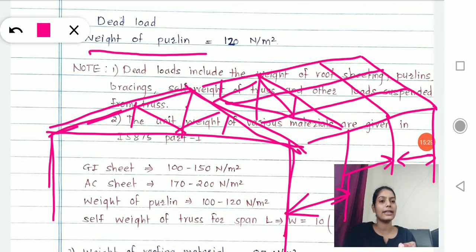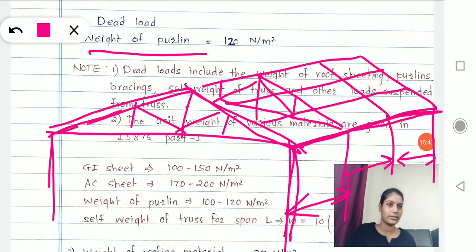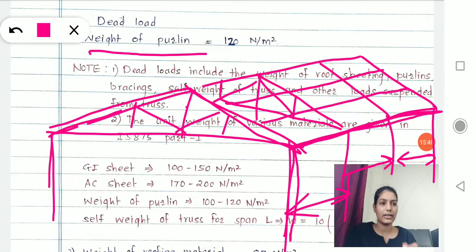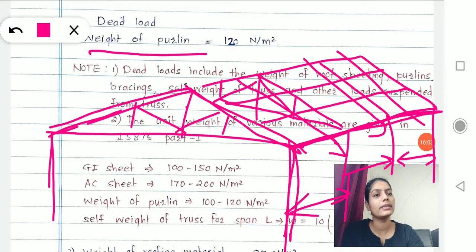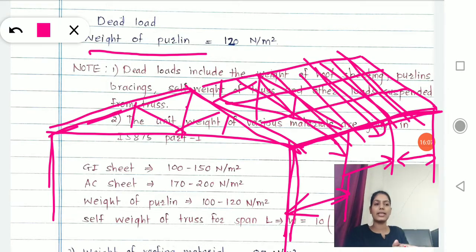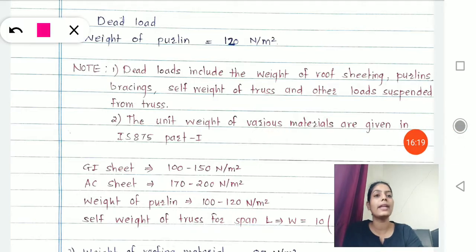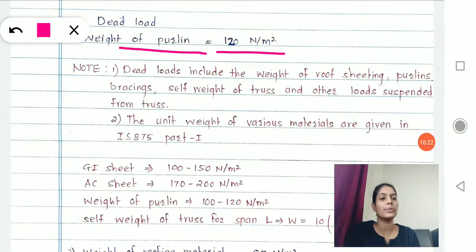The purlin has a second major purpose: to carry the roofing material above it. For example, if we are using GI sheets, the GI sheets are applied in this direction and to rest the GI sheet we need a beam below it — that is called a purlin. The weight of purlin is taken as 120 Newton per meter square.